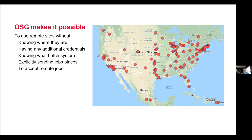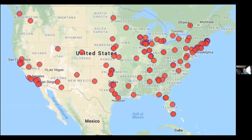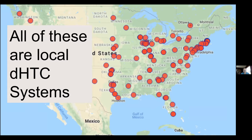With the OSG, we make it possible to use all these remote sites in an easy way. You can use them without knowing where exactly they are, which batch system they're running, or having individual credentials for each of hundreds of sites, or even explicitly saying which jobs go to which sites. On the flip side, with the OSG, we also make it easy to accept remote jobs from foreign places. Each of these dots on the map are local distributed high throughput computing systems, and you can add your site or use remote ones.